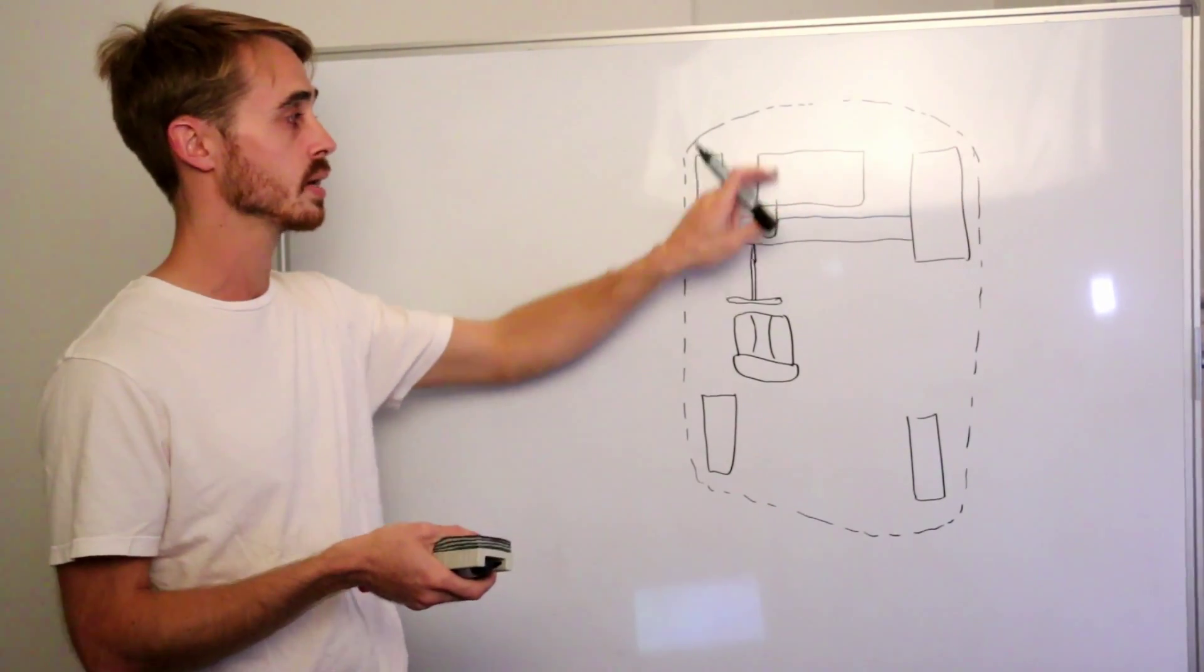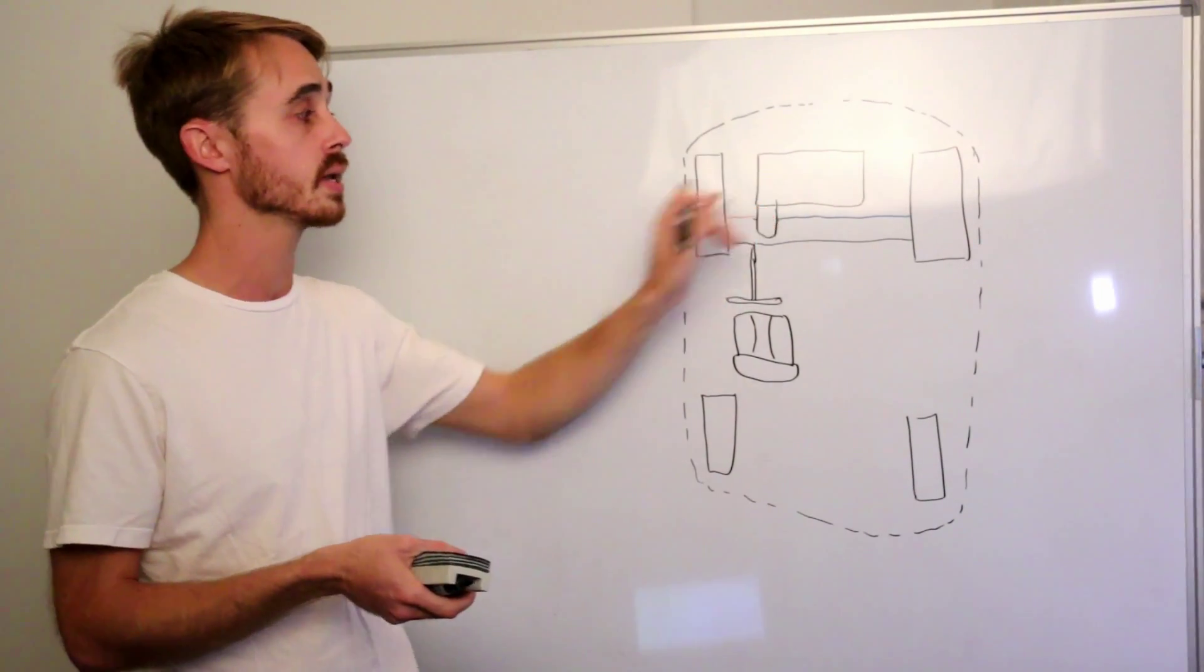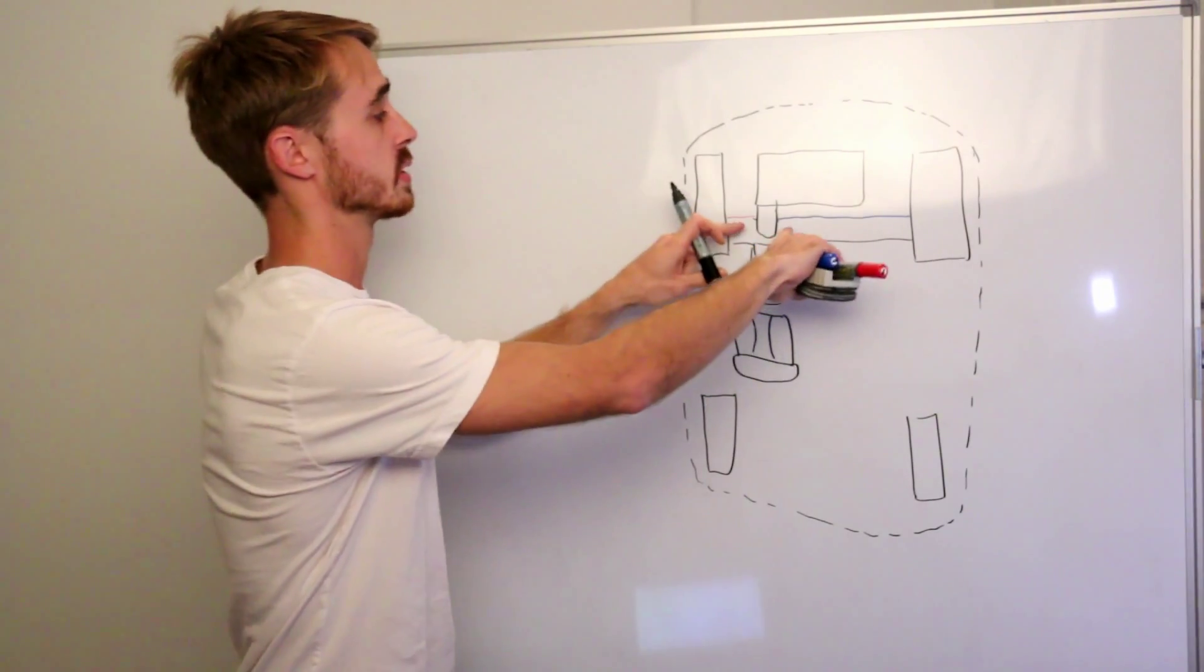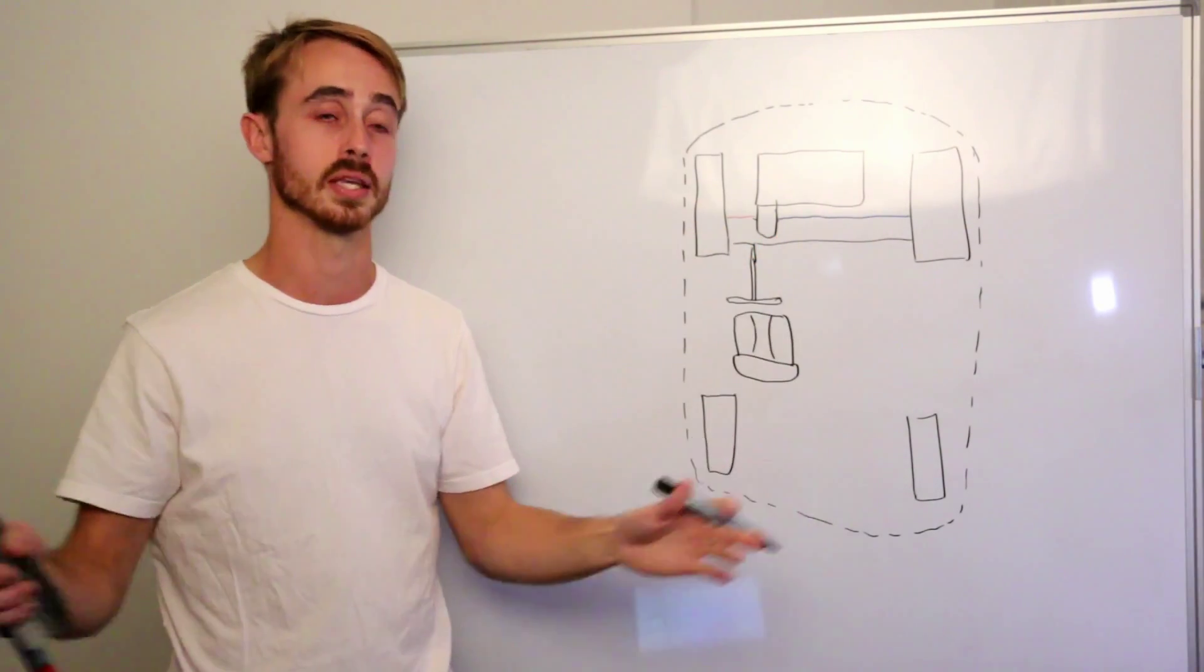So the engine will be running this way, gearbox and differential will be on this side, as a result the differential outputs will be on one side of the car, you'll end up with different drive shaft lengths to get to each front wheel.